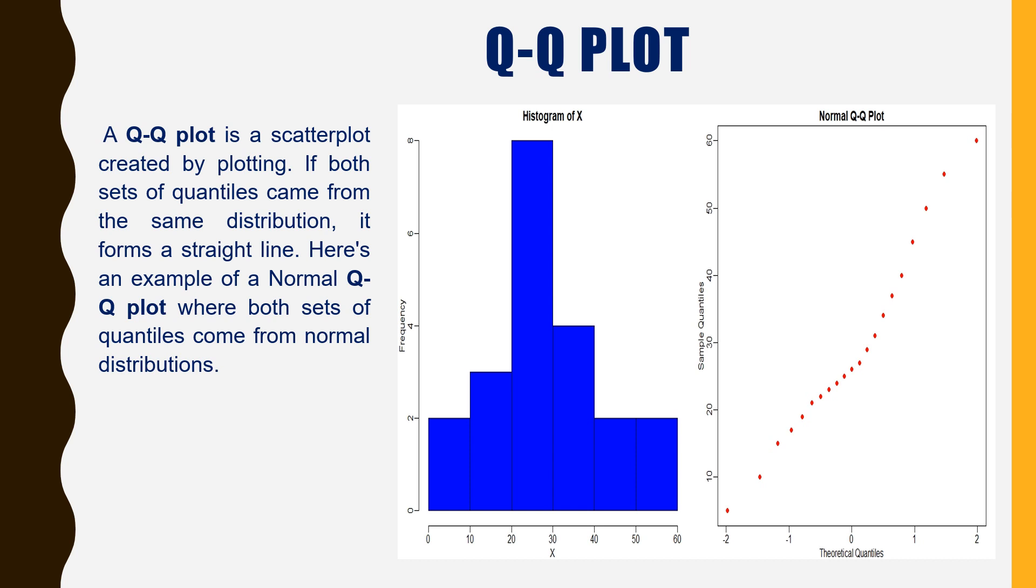Here's an example of a normal Q-Q plot where both sets of quantiles come from normal distributions. As you can see in the picture, these data points are forming roughly a straight line. Later in this video we're going to see more examples of Q-Q plots.